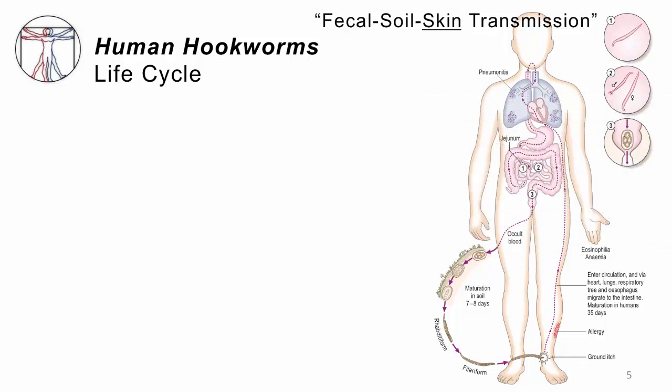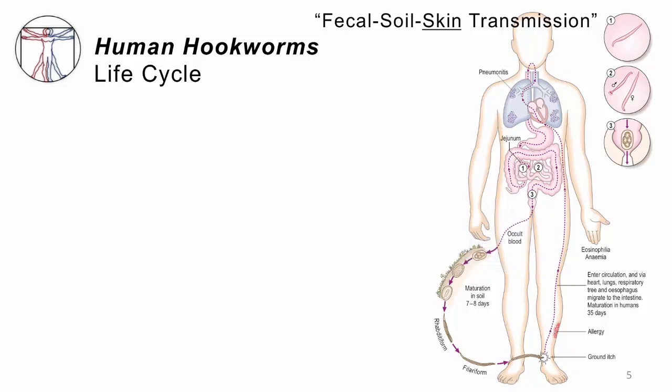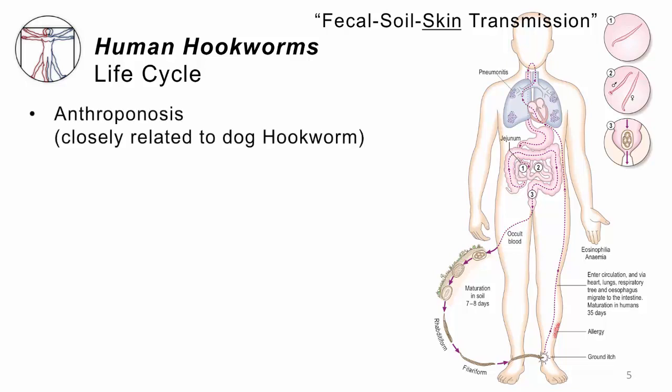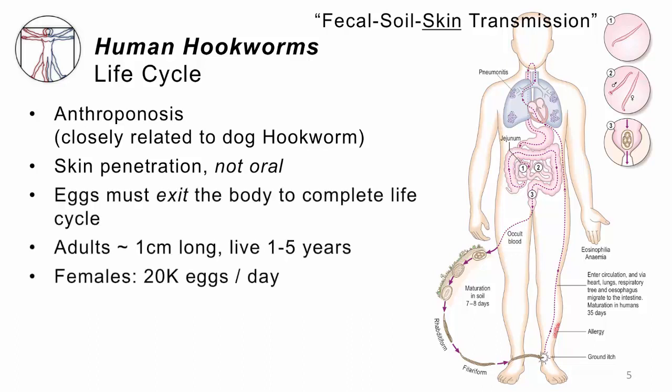What they do, of course, is make many, many eggs. Eventually the eggs will get passed in the feces. If we defecate indiscriminately into the ground, they'll be deposited there, and then over a period of about one week they will mature and eventually hatch into larvae that can penetrate the skin of the next passerby. Human hookworm infection is, by definition, an anthroponosis. The transmission is not oral, but by skin penetration. Those eggs have to exit the body to complete their life cycle — they have to embryonate in the soil and cannot hatch inside the human body. Each adult is tiny, only a centimeter long, but they can live for years.